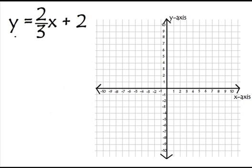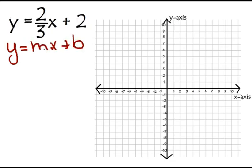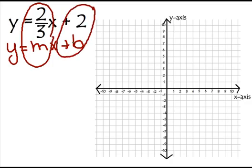Let's graph this equation y equals 2 thirds x plus 2 using the slope-intercept form. I always like to write that form underneath my equation, because I can see exactly what m is — my slope — and exactly what my y-intercept b is right away. So my y-intercept b equals 2.